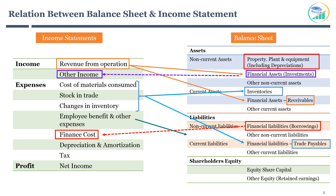Amortization is a similar concept for intangible assets like patents and trademarks. This depreciation and amortization is shown as an expense on the income statement.